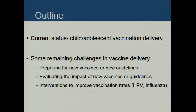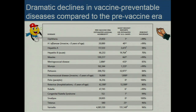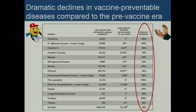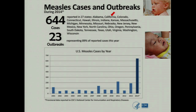There are a lot of challenges, but I'll cover three: preparing for new vaccines or new guidelines, evaluating the impact of new vaccines or guidelines, and interventions to raise rates. As background, we've had dramatic declines in vaccine-preventable diseases compared to the pre-vaccine era. This slide shows the unbelievable reduction in all of those diseases, although sometimes there are outbreaks — remember the measles outbreak a couple years ago.